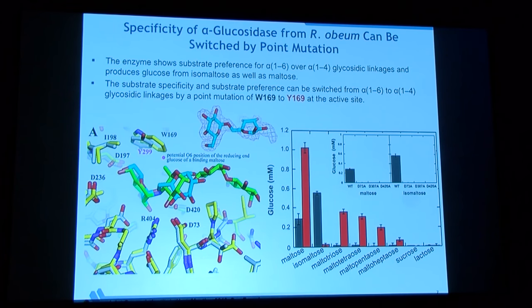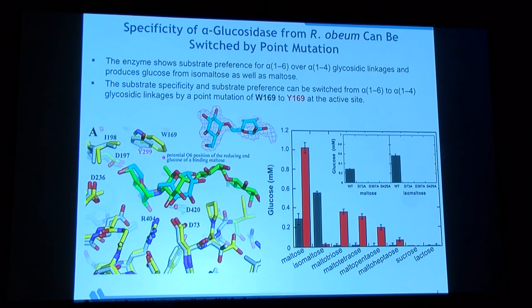I'll give you a couple of examples of what you can learn from structure that you cannot learn from sequence. We determined a crystal structure of alpha-glucosidase from a human microbiome bacterium — about 10% of its genome codes for carbohydrate-processing enzymes. This alpha-glucosidase is very similar to the human enzyme. When we looked at the active site, we found a tryptophan. This enzyme prefers alpha-1,6 glycosidic bonds over 1,4, but when we mutated tryptophan-169 to tyrosine, it switched specificity from 1,6 to 1,4.